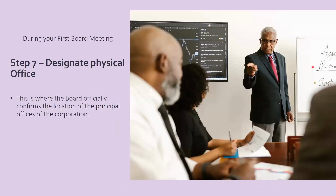Next, you will designate your principal office. This is where the board officially confirms the location of the principal offices of the corporation. Some boards will meet at individuals' homes, at various restaurants and other locations, or at the offices of the nonprofit. Wherever you decide to meet, that has to be documented — for example, meeting at each board member's home on a quarterly basis, or at the office of the organization located at 111 Main Street, Los Angeles, California. Whatever you decide, it must be documented.